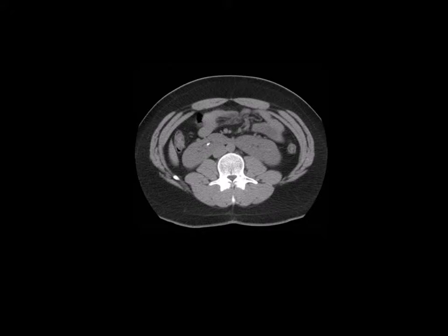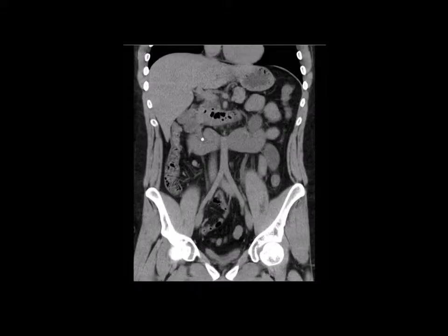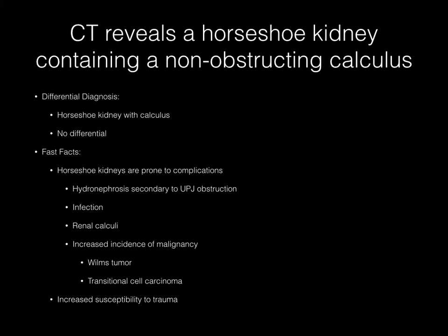Now pause your media player. Axial and coronal CT images without IV contrast demonstrate a horseshoe kidney containing a non-obstructing calculus. The diagnosis is horseshoe kidney with renal calculus. There really is no differential diagnosis here.